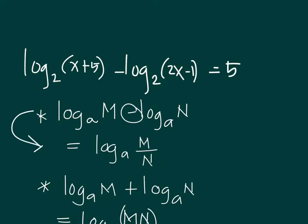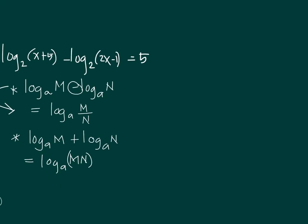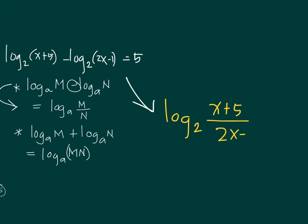Applying the quotient law to our equation, log base 2 of (x+5) minus log base 2 of (2x-1) becomes log base 2 of [(x+5)/(2x-1)] equals 5. This is now like Example 1 — a single log on one side and a number on the other.